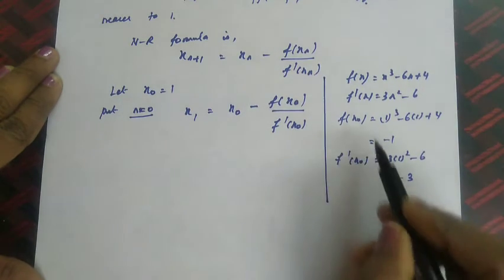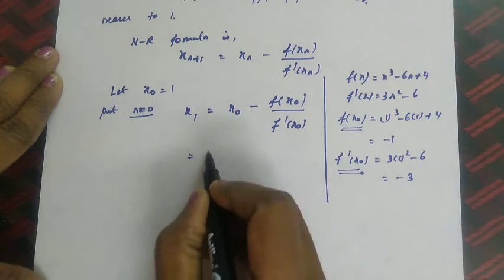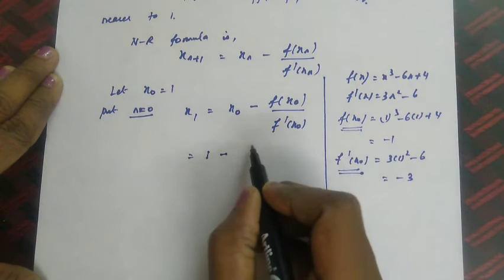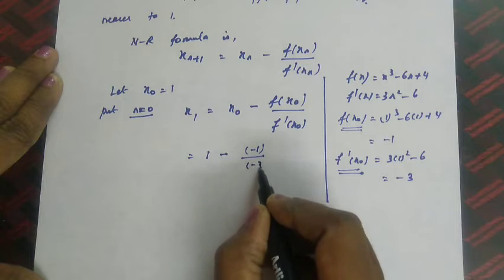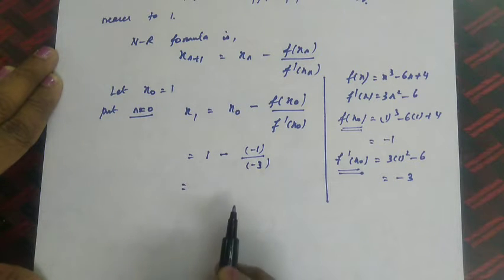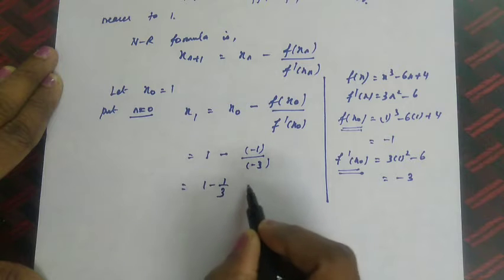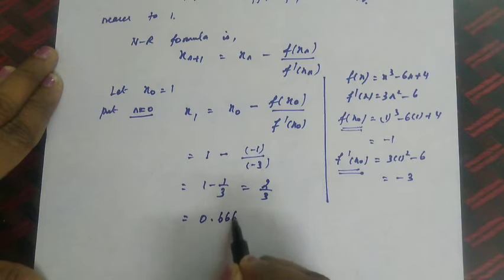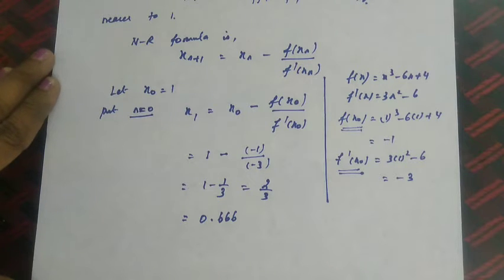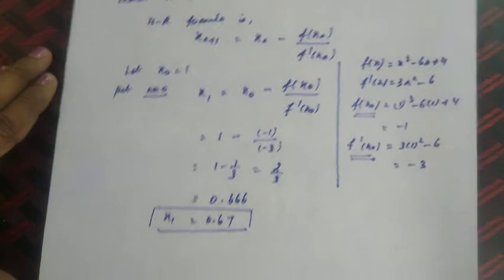Substituting back into the formula: x₁ = 1 - f(x₀)/f'(x₀) = 1 - (-1)/(-3) = 1 - 1/3 = 2/3. Using a calculator we get 0.666, which rounded correct to two decimal places gives x₁ = 0.67. This is the first approximation.